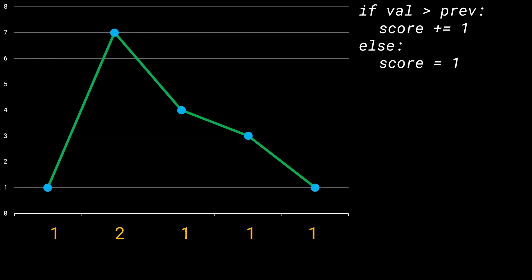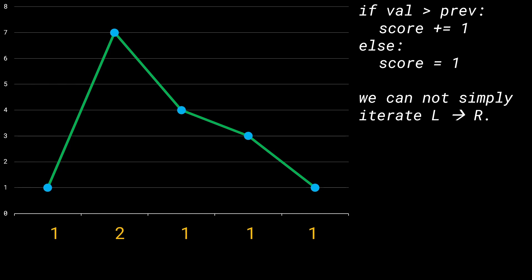However, this answer is incorrect. The rightmost kid with rating 1 correctly gets 1 candy, but the kid at the second-to-last position with rating 3 should actually get 2 candies. The question specifies we look at both right and left neighbors. The kid with rating 3 has a higher rating than the kid of rating 1 on its right-hand side, which means it should get a greater amount of candy. So we cannot simply iterate from left to right to get the correct answer.